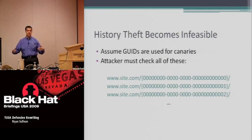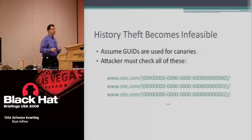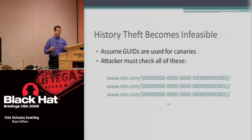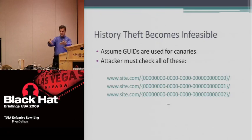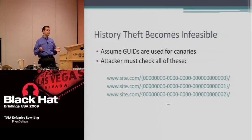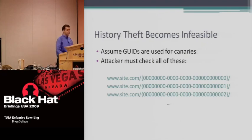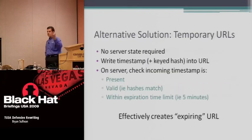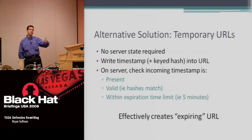History theft is also completely infeasible with this approach. If the tokens are GUIDs rather than something simple like ABC123, an attacker trying to check whether a user has visited a given page would have to check every individual GUID — site.com/00000000, site.com/00000001, and so on. At 10,000 checks per second, it would take more than a hundred trillion times the age of the universe to check for a single page.